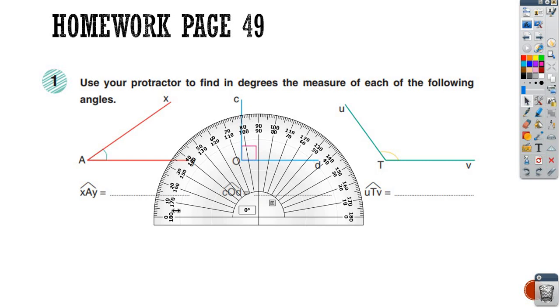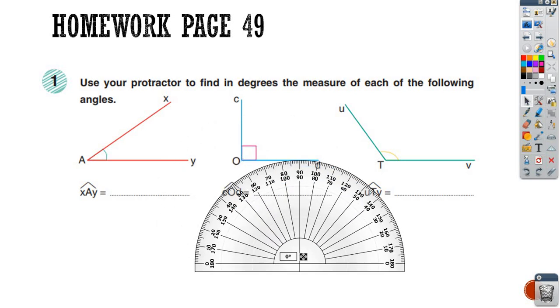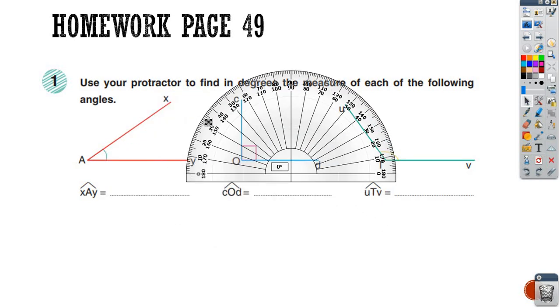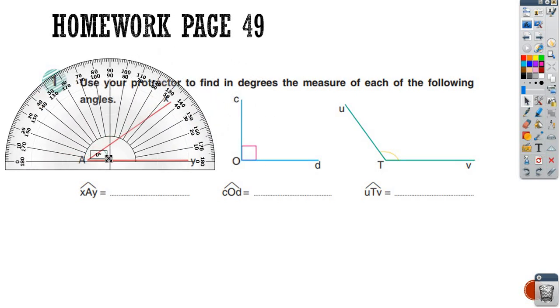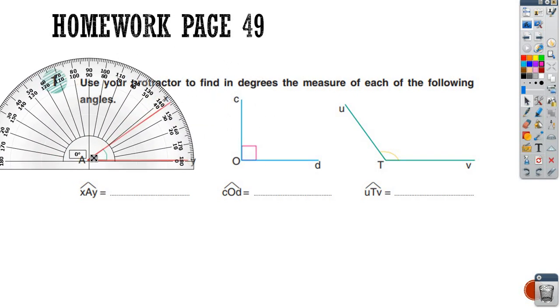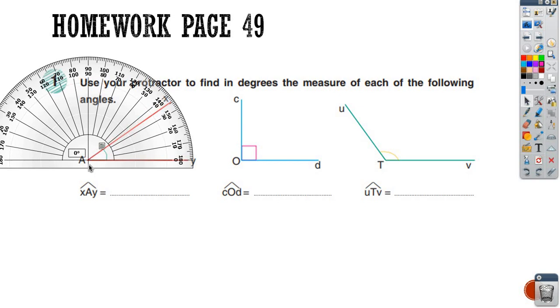Homework on page 49. On page 49, we have to use the protractor to find in degrees the measure of each of the following angles. So don't forget, step 1, to place the protractor on the vertex A. I place it on A exactly. And I start from 0, one of the sides should be on 0. And I start counting 0, 10, 20, 30. And here I have 31, 32, 33, 34, 35 because it's less than 40. So the angle XAY is equal to 35 degree. Excellent.